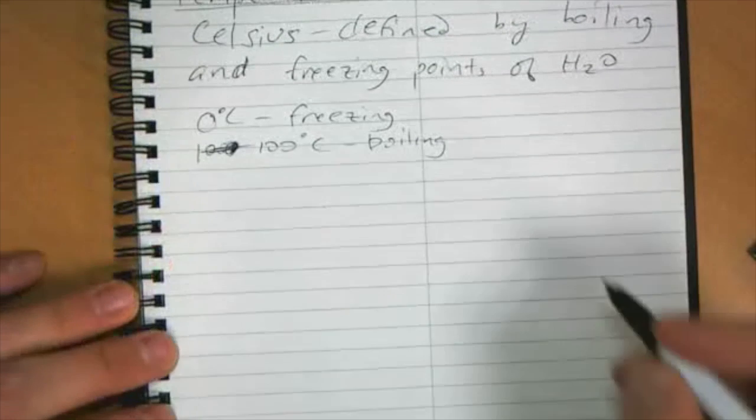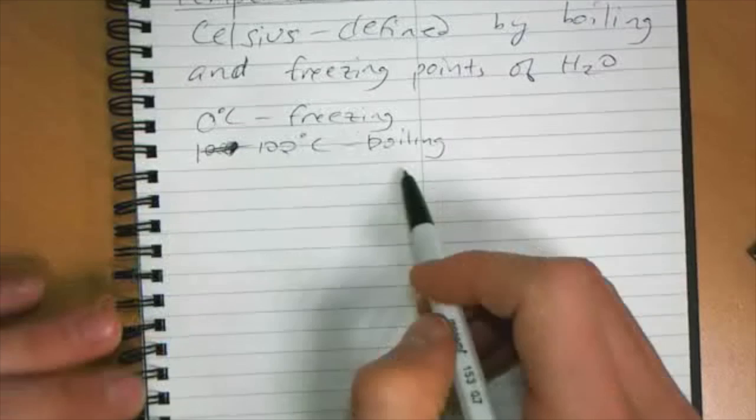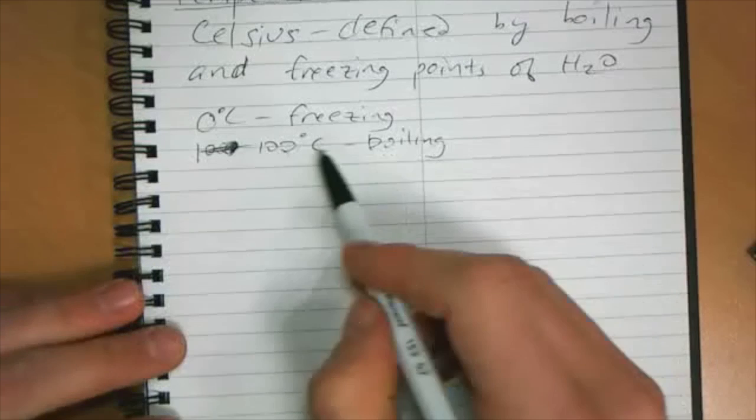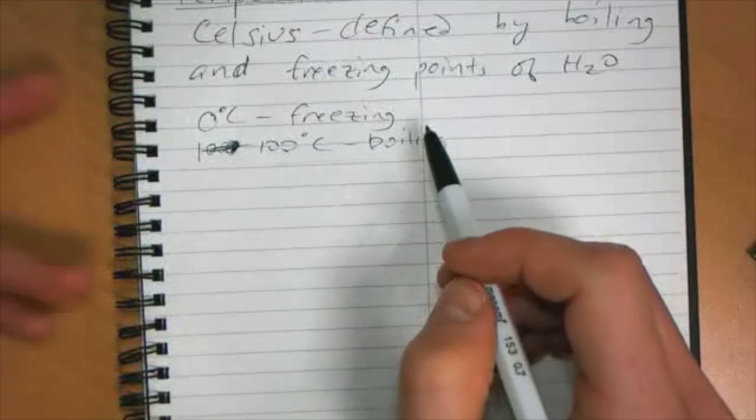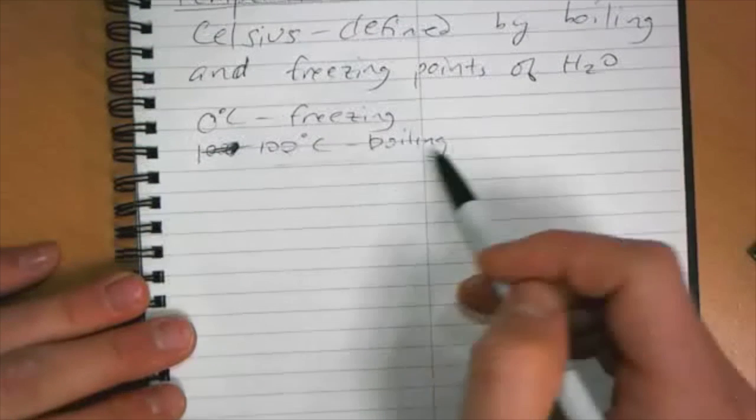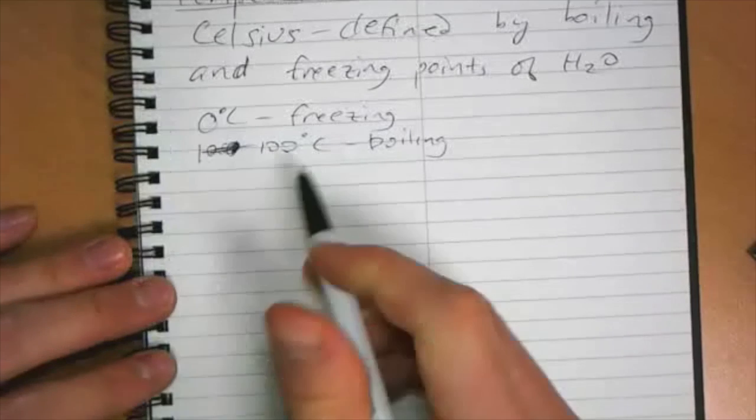Originally, these were swapped, and 100 was the freezing point, and zero was the boiling point. But since boiling water has more energy, somebody decided it made more sense to have a higher number correspond to boiling.